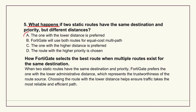It's a key part of how the routing table gets built - destination first, then distance, then metrics usually. Knowing that distance acts as that tiebreaker for static routes when priorities match is fundamental to predicting path selection. Lower distance wins in that specific case.